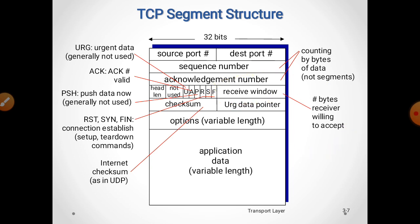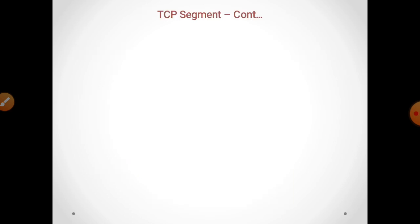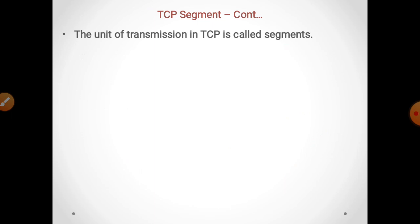The receive window indicates the number of bytes the receiver is willing to accept — this is the window size. We have seen packets with window size 4. The unit of transmission in TCP is called a segment. From application layer to transport layer, we send data in segments.